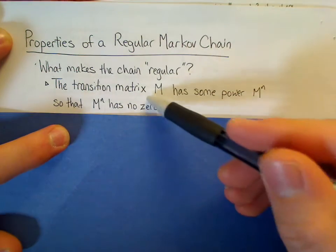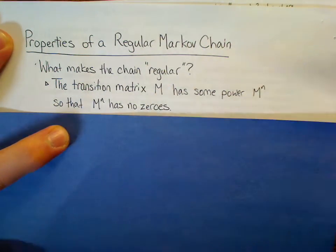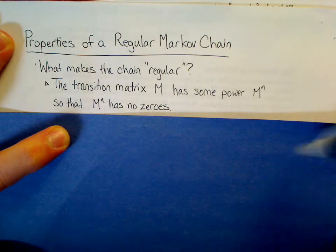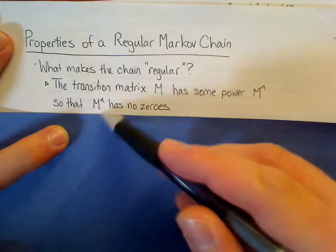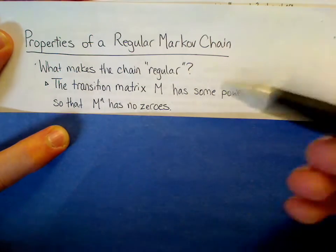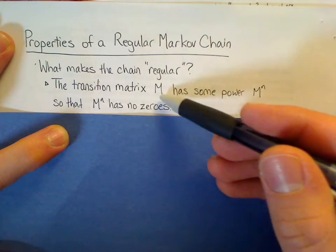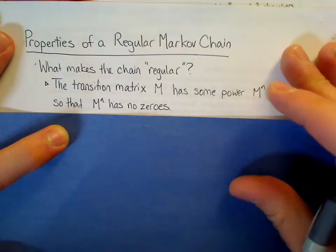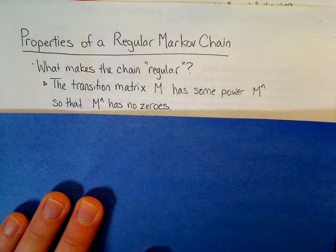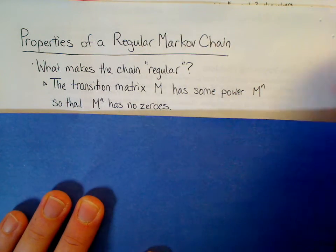Well, it turns out the transition matrix M that's associated with the Markov chain has some power M^n, that's M multiplied by itself, so that M^n has no zeroes. Eventually all the zeros evaporate. Maybe M had no zeros to begin with, but even if it does, maybe eventually all those zeros will go away. Sometimes they persist, in which case this isn't regular, and none of the stuff I'm about to say has any relevance to your situation.